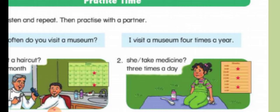Number two: 'She takes medicine three times a day.' Question: 'How often does she take medicine?' Answer: 'She takes medicine three times a day.'